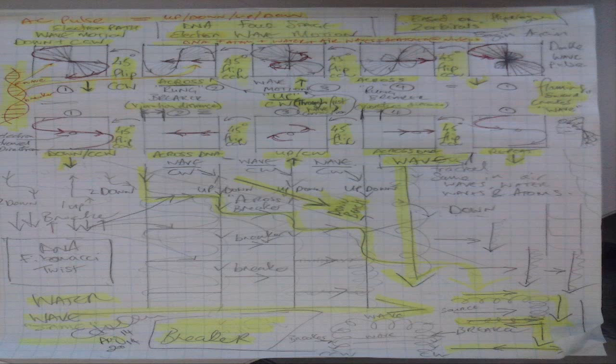Now an electron goes around — let's take hydrogen, because that's the picture I've drawn. I've drawn it with two orbitals and I show how the electron will link into the second wave continuously.